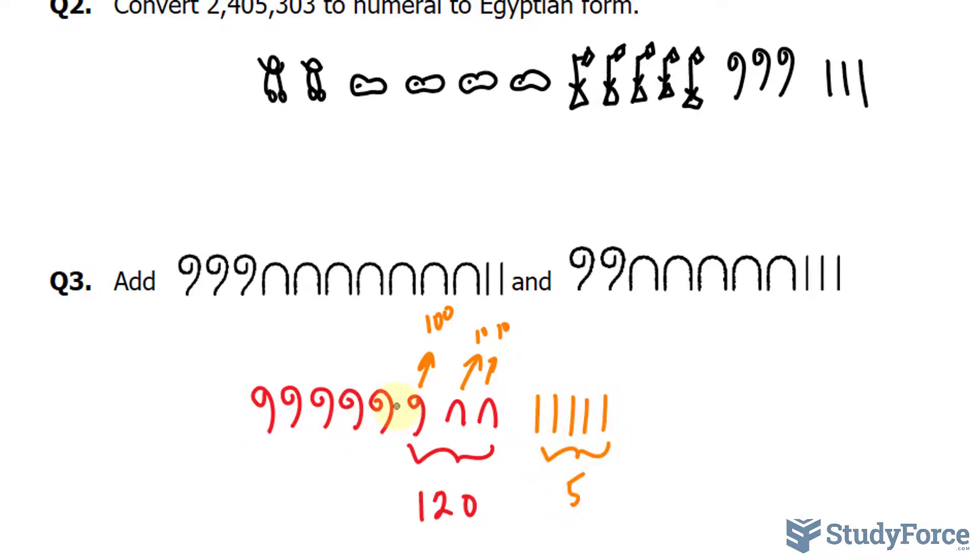So adding these all up, 1, 2, 3, 4, 5, 6, 6 scrolls, that's 600, plus, representing just these two, that's 20, that's 620, plus 5 makes 625.